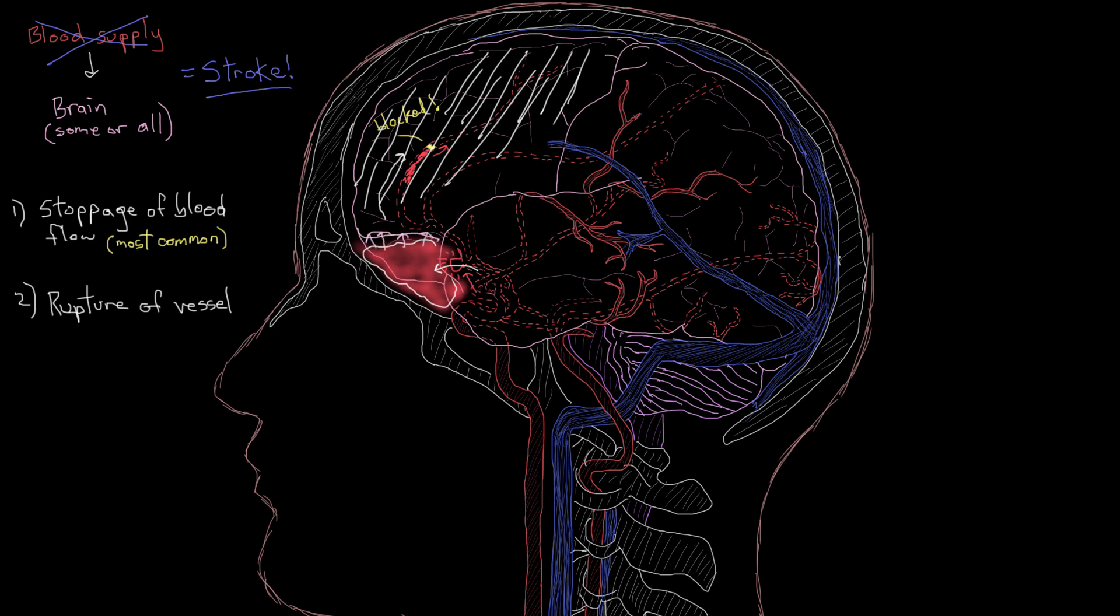Those are the two types of stroke. You can get stoppage of blood flow to an area, which is also called an ischemic stroke. Ischemic referring to a cellular environment where there's not enough oxygen. Or you can get rupture of a vessel, that's called a hemorrhagic stroke, referring to a sudden torrential bleeding outburst.